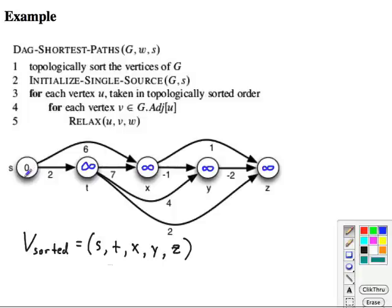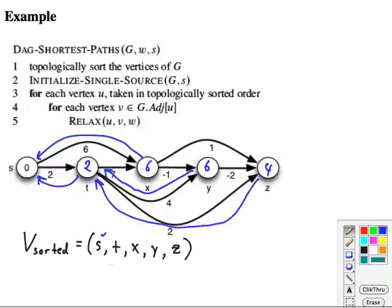And look at each vertex V that's adjacent to U. Can we relax over that edge? So here, at first U is S, V is T. And, of course, the distance estimate to S plus 2 is less than infinite. So we do an update here to 2 and we put in our predecessor pointer. S to T, same thing. 6 is less than infinite, and we put in our predecessor pointer. Okay, we're done with S. Now we go to the next vertex in the topologically sorted list, T. T to X. 2 plus 7 is 9. That's not less, nothing happens. 2 plus 4 is 6 is less than infinite, and we record the predecessor. And same thing here. 2 plus 2 is 4, and record a predecessor. And we're done with T.